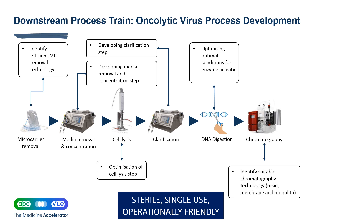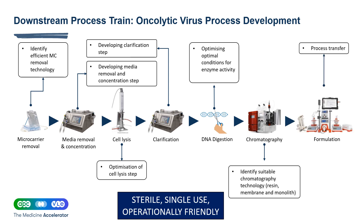Chromatography is then incorporated to remove host protein, residual BSA, and residual digestion enzyme from the process. For this step, we have worked with different resin and membrane types, including monolith technology and combinations of different chemistries, to optimize and further reduce process impurity. The last step is final formulation by TFF — while this step was largely a process transfer from the client, APC has experience running TFF for MVA in cassette or hollow fiber format.